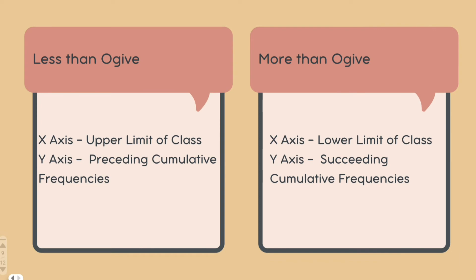We can have less than ogives and more than ogives. Less than ogive means the x-axis has the upper limit and we plot preceding cumulative frequencies. More than ogive means the x-axis has the lower limit and we plot succeeding cumulative frequencies. If data on the y-axis represents values less than the x value, it's a less than ogive.